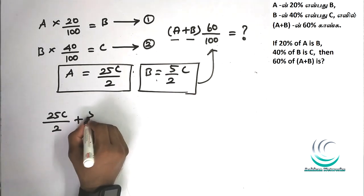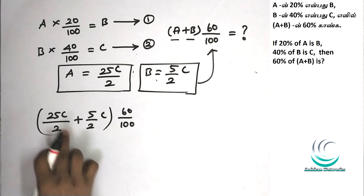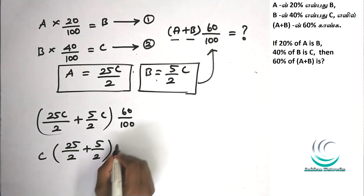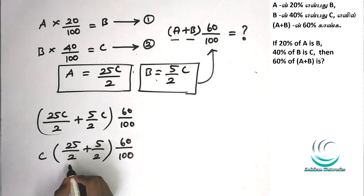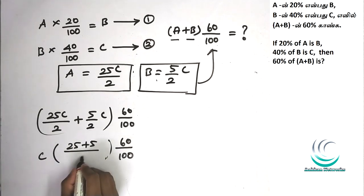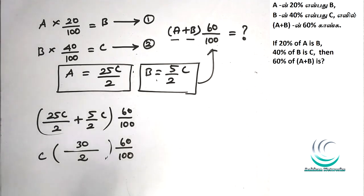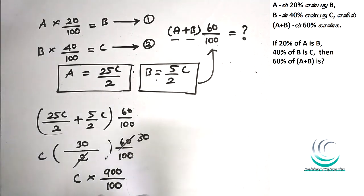So how do we apply? 5 by 2 into c, into 60 by 100. Just simplify it. There is c, so c value: 25 by 2 plus 5 by 2, into 60 by 100. Solve it: divide 2 by 2. So 25 plus 5 by 1 divided by 2. 25 plus 5 is 30, so 30 by 2. Simplify, cancel. Here is 30, 30 by 30 gives 900 by 100. So finally, c into 900 by 100, which is 9c.